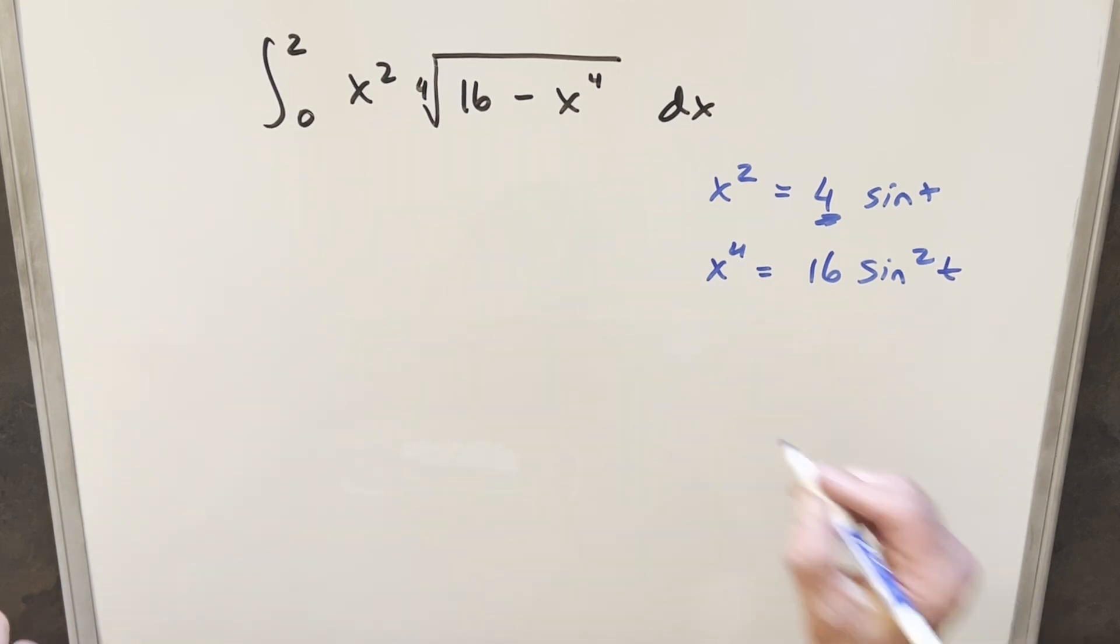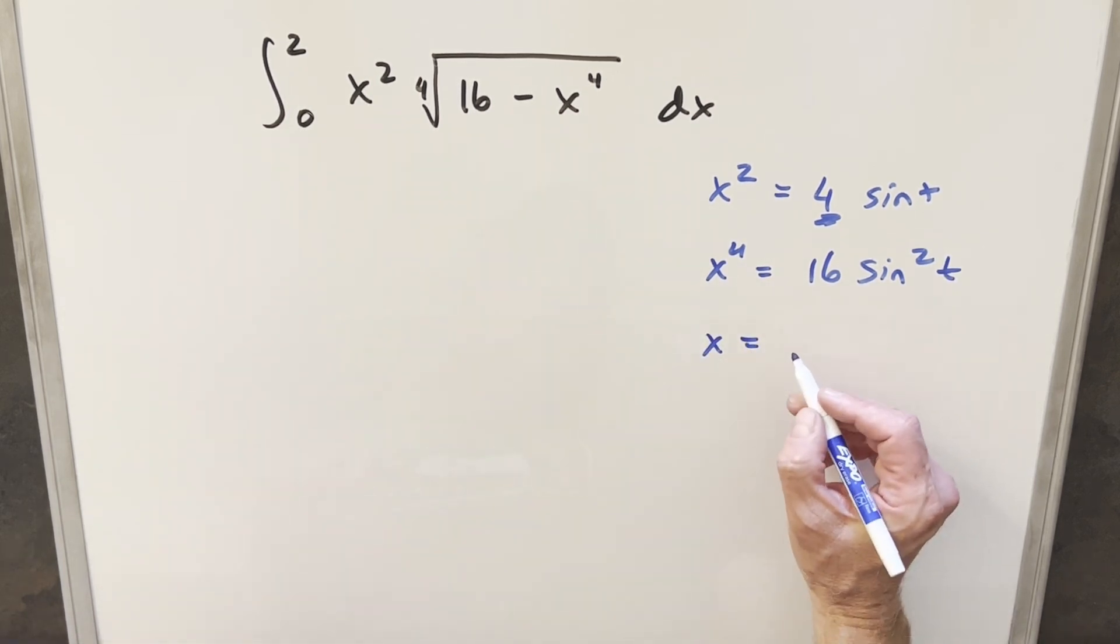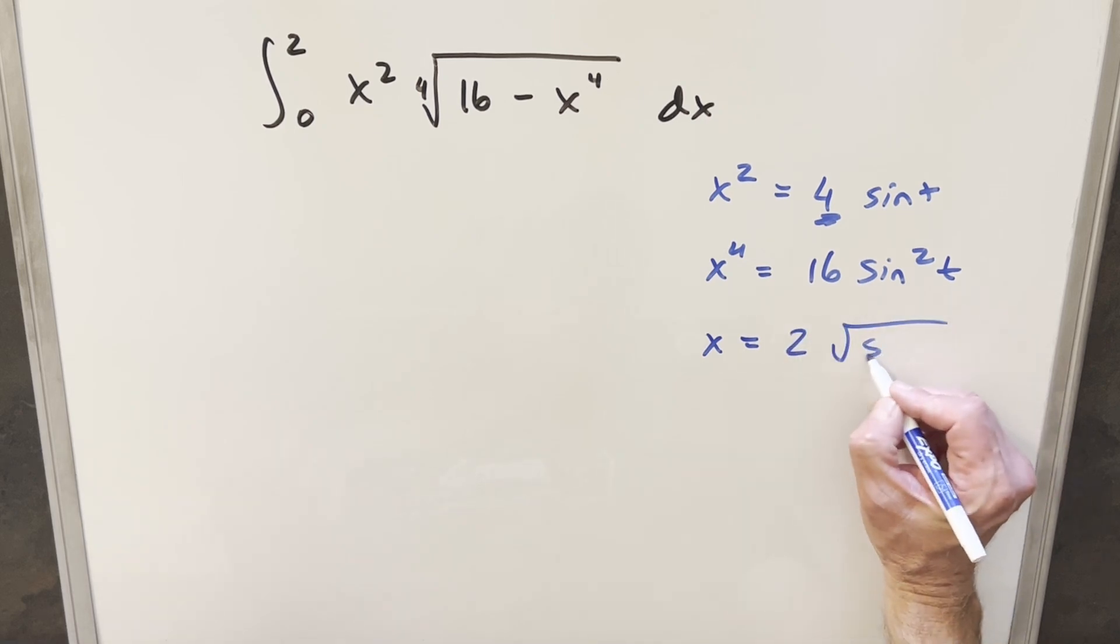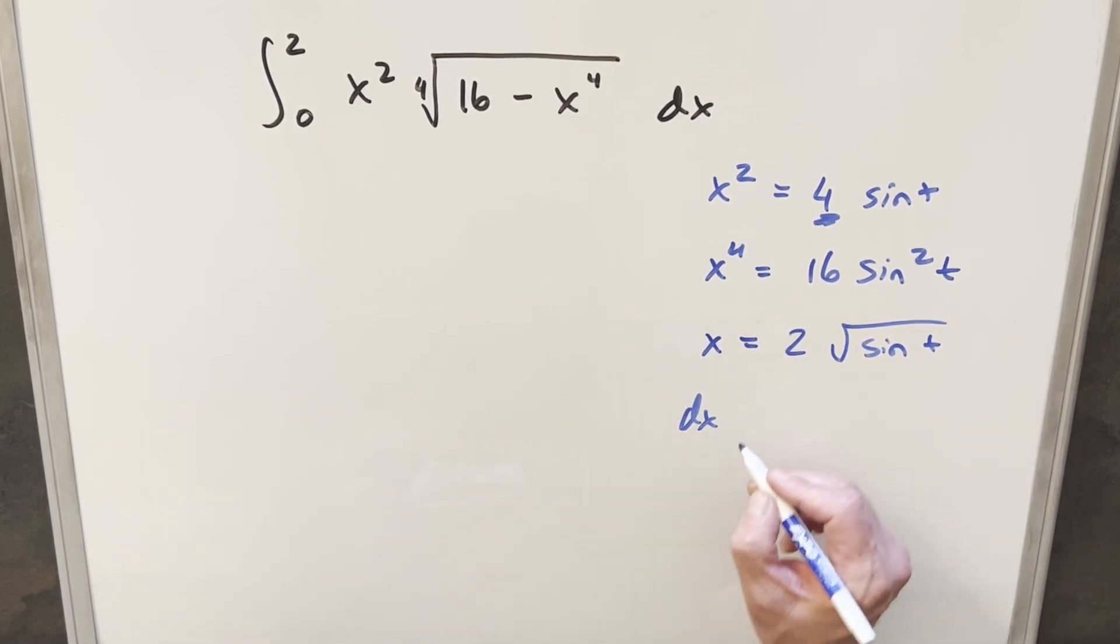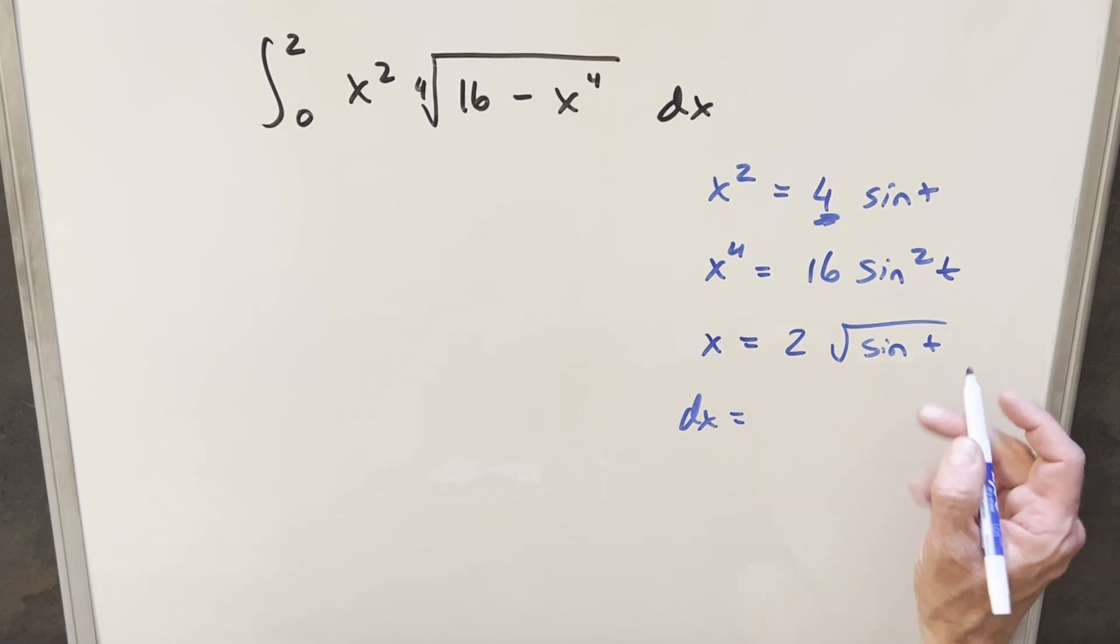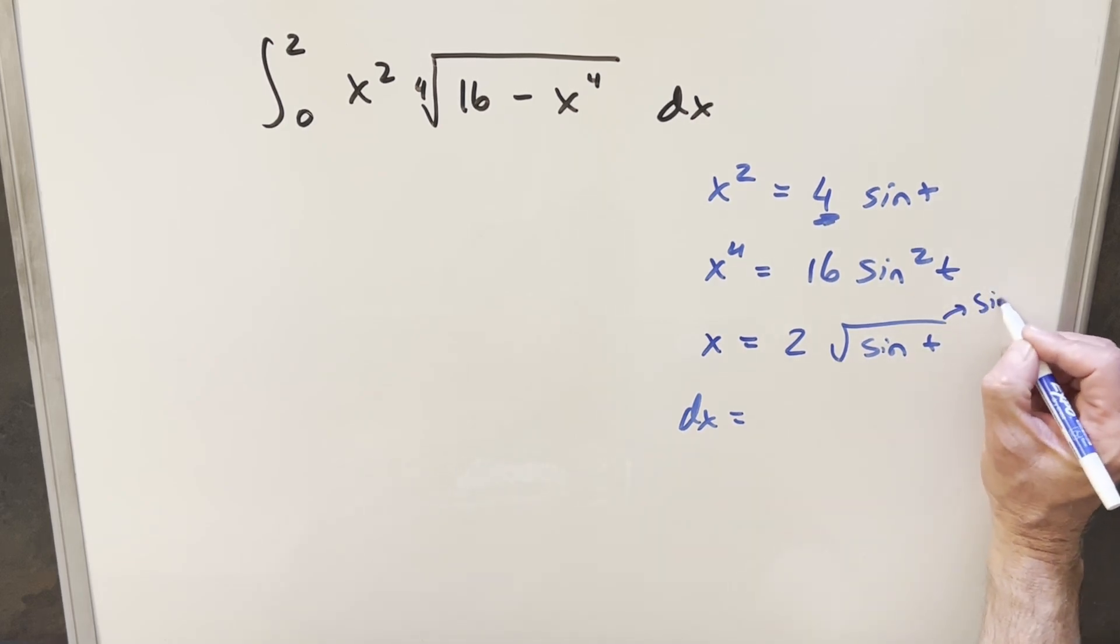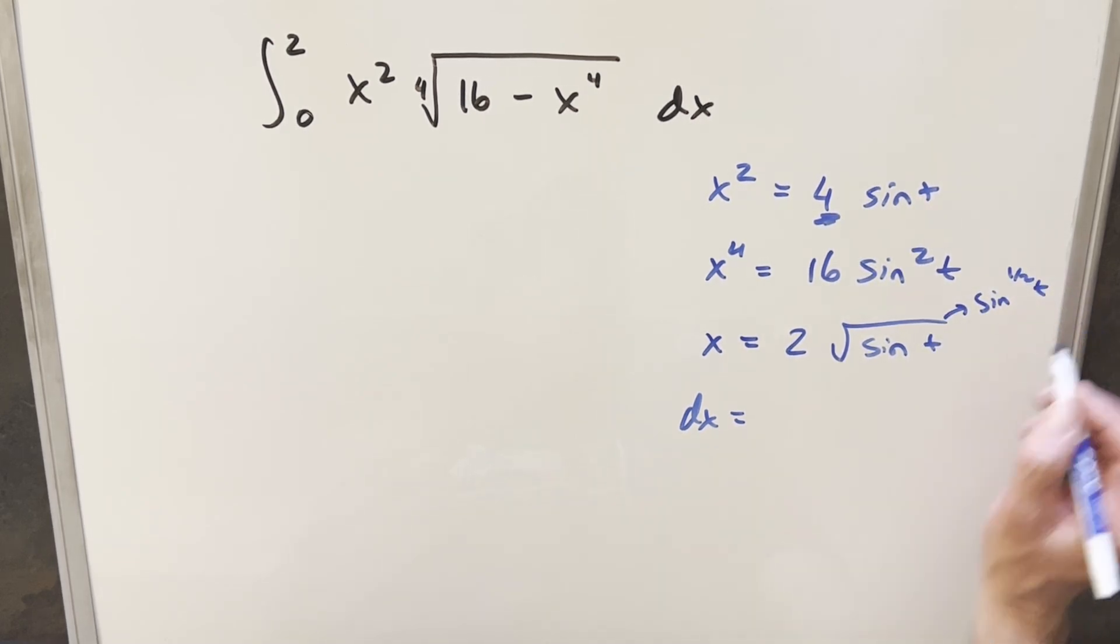But let's also get a value for x just because I want to make my derivative easy. So if we take a square root on both sides, this is going to become 2 square root of sine t. So I'll go ahead and differentiate, get our dx value. So here, I'll look at this as sine to the one half in order to use power rule.